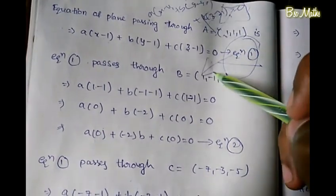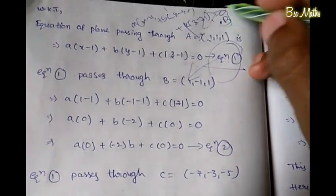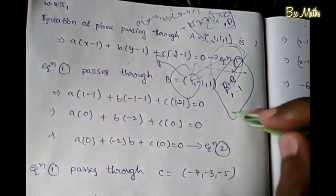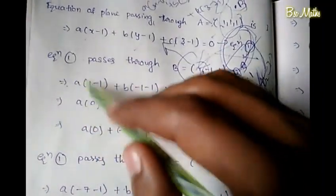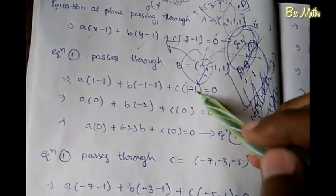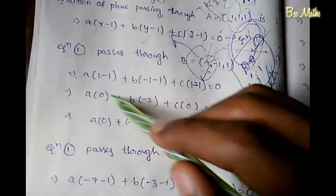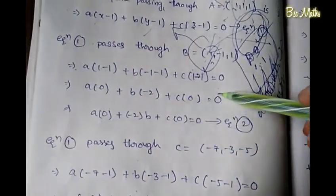Equation number 1 passes through point B. Since point B (1, -1, 1) lies on the plane, we substitute: a(1-1) + b(-1-1) + c(1-1) = 0, which gives a(0) + b(-2) + c(0) = 0. Therefore -2b = 0, giving us equation number 2.